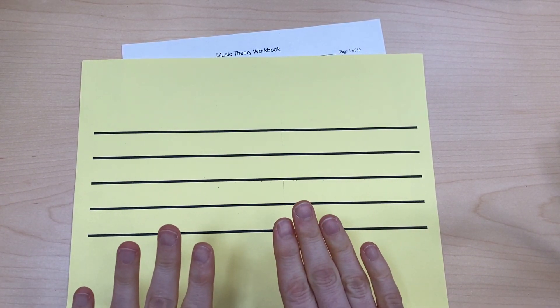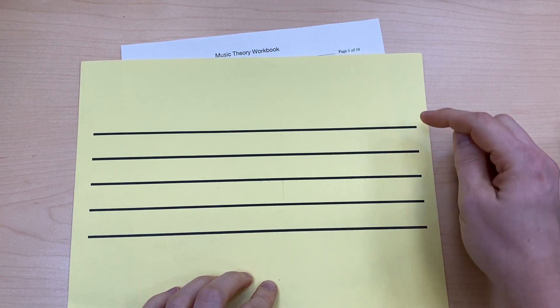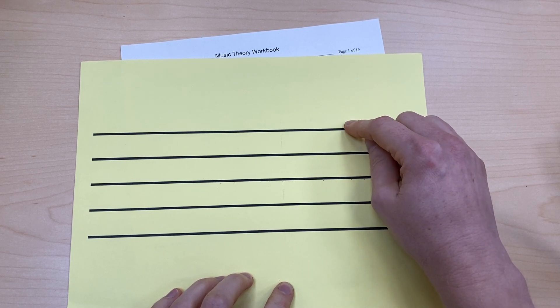Today, we're going to be learning how to draw the music staff. The music staff is made up of five lines. We count from the bottom up: one, two, three, four, five.